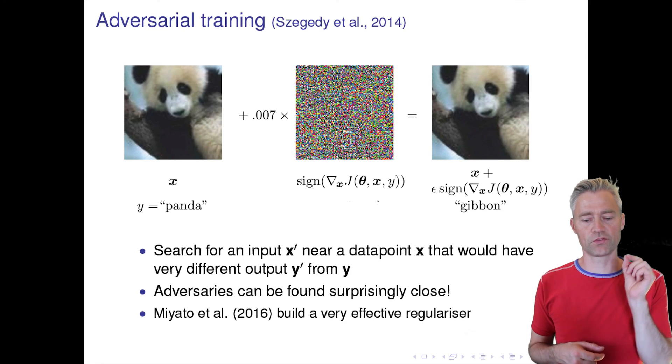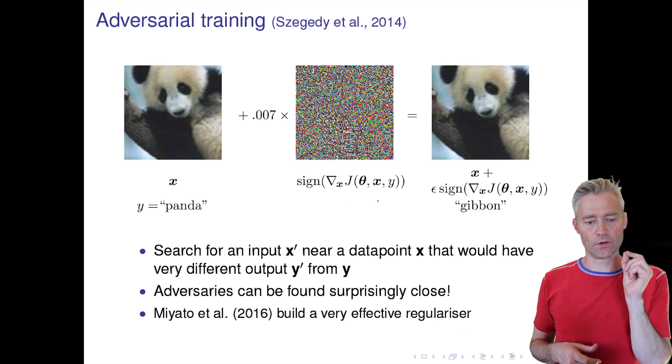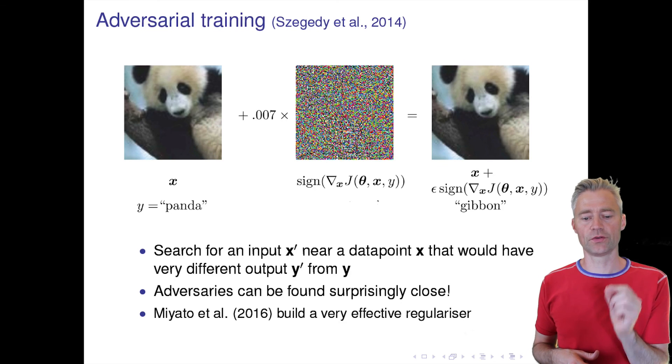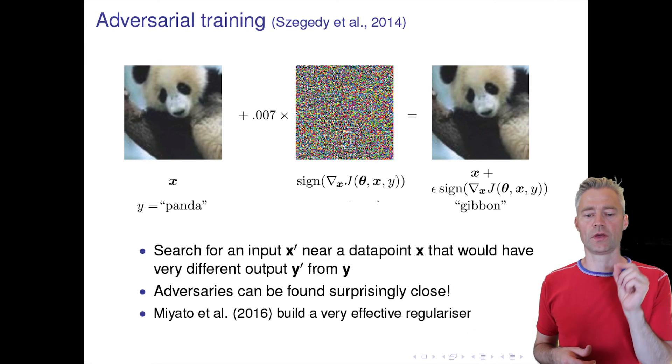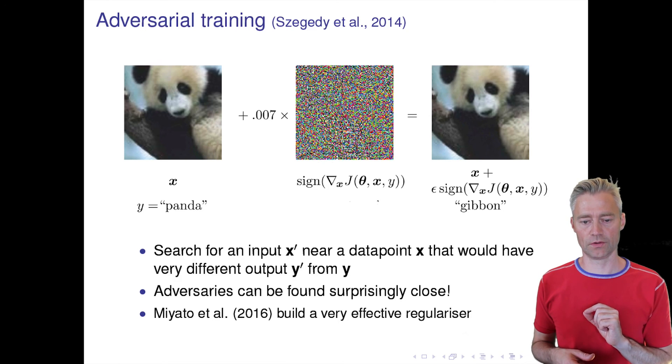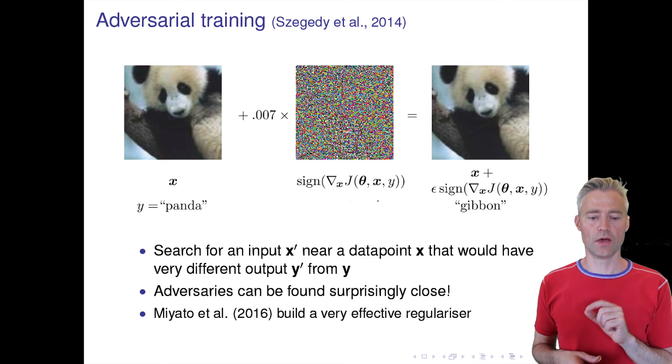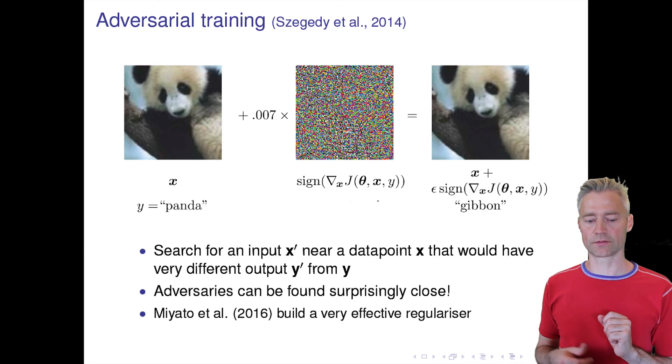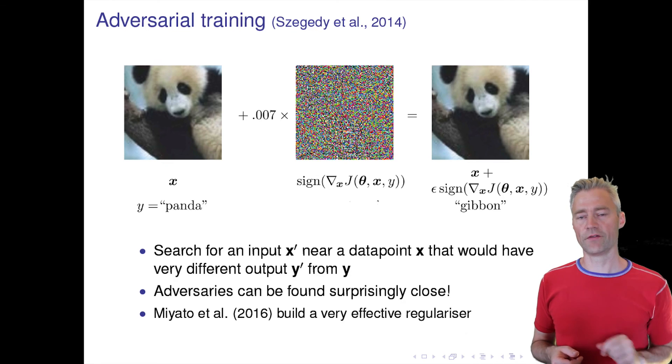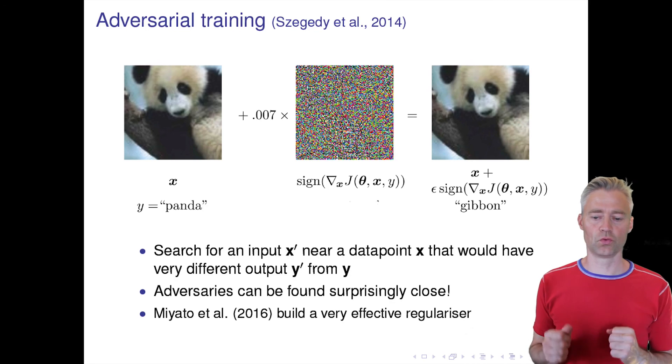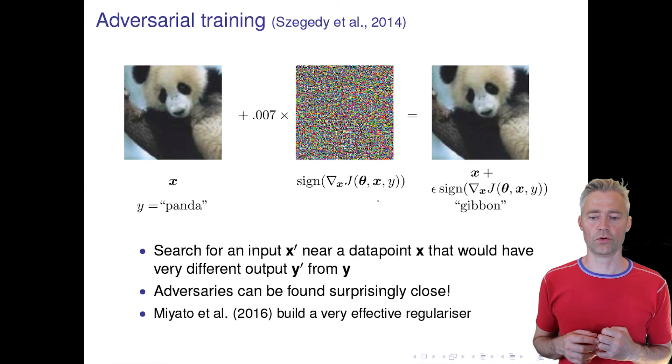Then we've just taken the sign of this increase and then we have multiplied by a small factor. So you can see we only need a very small image added to this in order to confuse the network.